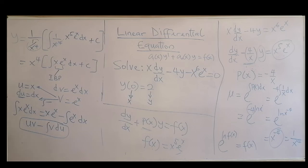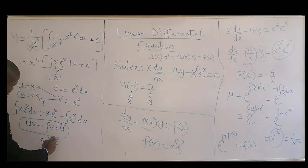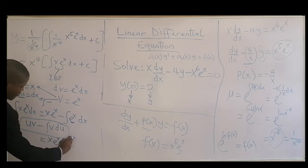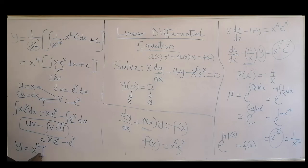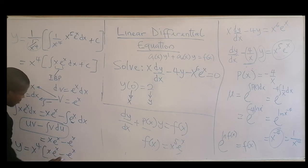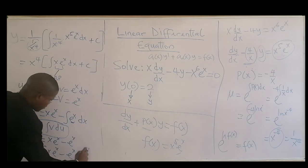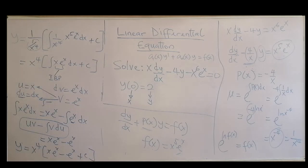Substituting back, y = x⁴[xeˣ − eˣ] + c. Opening the brackets: y = x⁵eˣ − x⁴eˣ + cx⁴.